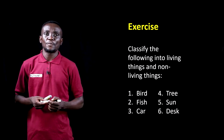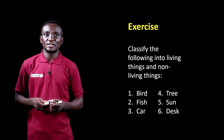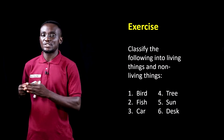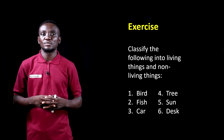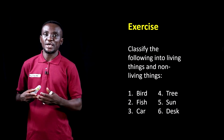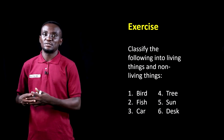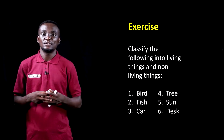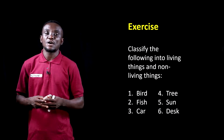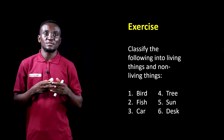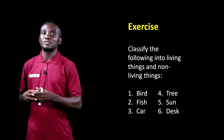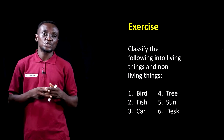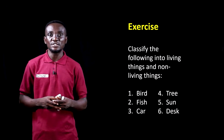Before we continue, we'd like you to classify the following into living things and non-living things. Draw a table with living things in one column and non-living things in another column. Tell us whether birds, fishes, cars, trees, the sun, and desk are living or non-living. Tell us which ones are living and which ones are non-living things.